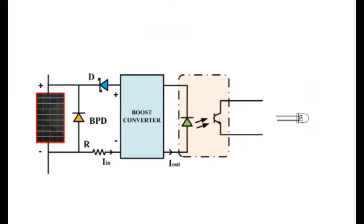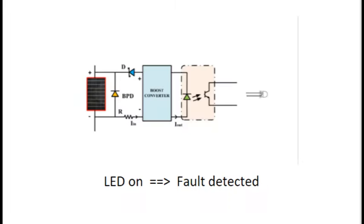The output terminals of the boost converter are connected to an optocoupler. To verify and visually confirm the presence of a fault, an LED has been connected at the output terminals of the optocoupler. A glowing LED signifies the presence of a fault in the panel connected to that particular detection circuitry.